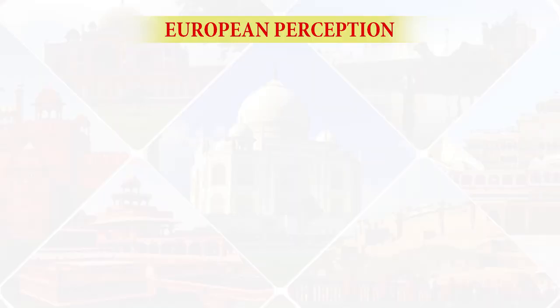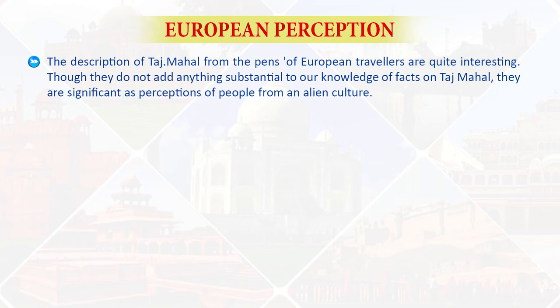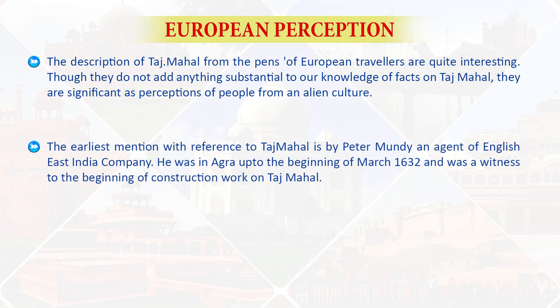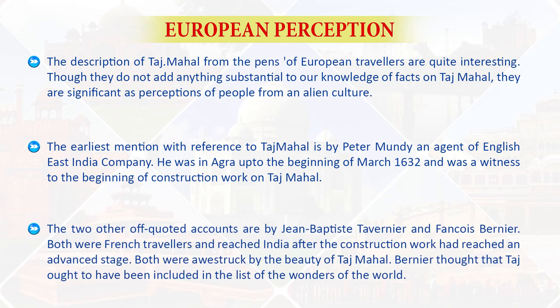Let's understand the Europeans' perception. The descriptions of Taj Mahal from the pens of European travelers are quite interesting. Though they do not add anything substantial to our knowledge of facts on Taj Mahal, they are significant as perceptions of people from an alien culture. The earliest mention with a reference to Taj Mahal is by Peter Mundy, an agent of the English East India Company. He was in Agra up to the beginning of March 1632 and was a witness of the beginning of the construction work on the Taj Mahal. The two other oft-quoted accounts are by Jean-Baptiste Tavernier and François Bernier. Both were French travelers and reached India after the construction work had reached an advanced stage. Both were awestruck by the beauty of Taj Mahal. Bernier thought the Taj ought to have been included in the list of the wonders of the world.